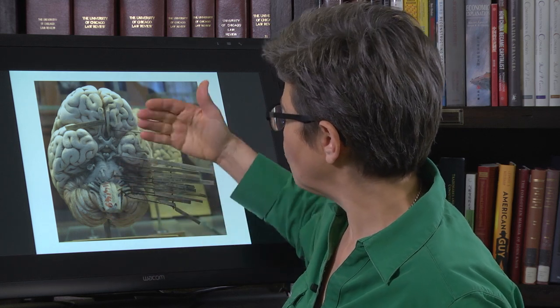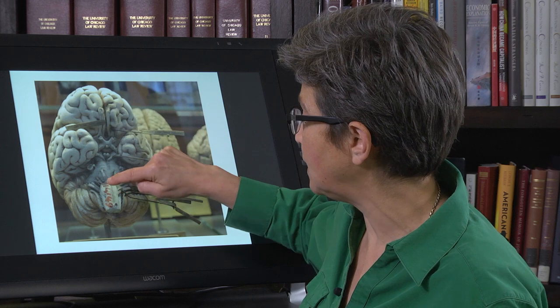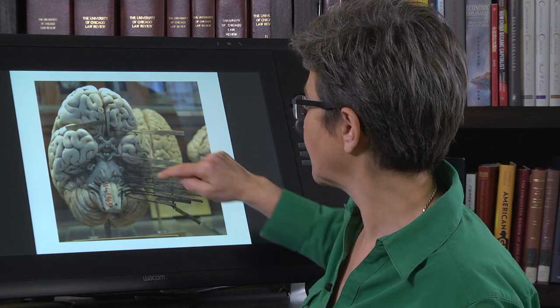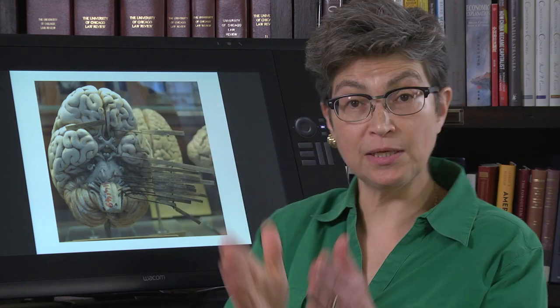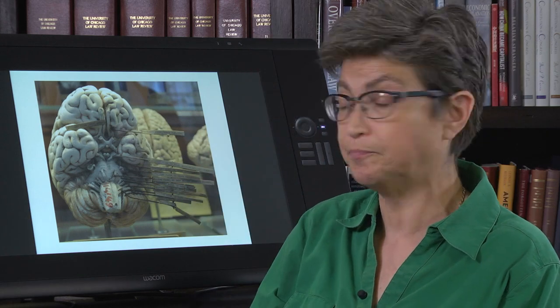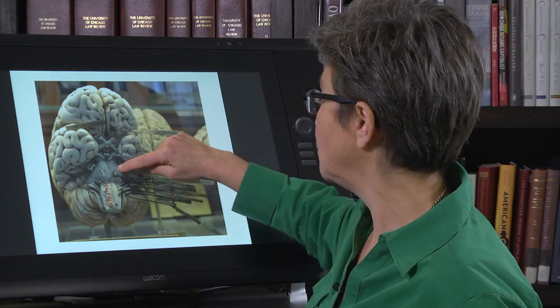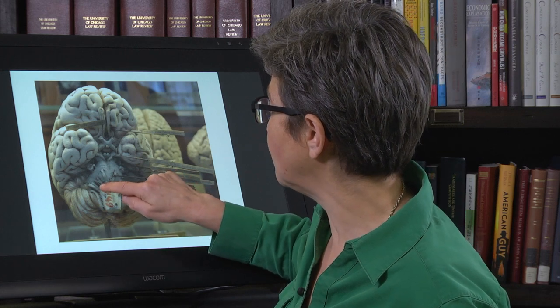CN VI through VIII all line up along the junction between the pons and the medulla. CN VI, abducens, is at the midline — it's a somatic motor muscle, so that makes sense. CN VII, facial, is dominated by branchial motor axons so it's still midline but lateral to the somatomotor column. CN VIII, vestibulocochlear, is a special sensory nerve coming in most laterally.